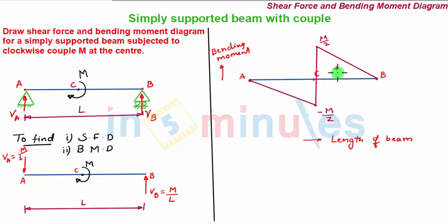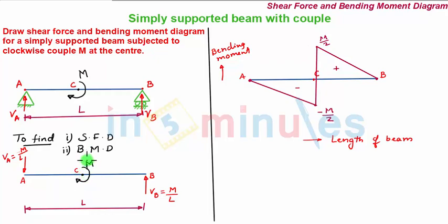We can see that the right half of the bending moment diagram is positive and the left half is negative. The maximum bending moment occurs at point C — it is both positive and negative: positive just to the right of C and negative just to the left of C. This diagram is called the bending moment diagram, denoted BMD. With this, the problem is solved.